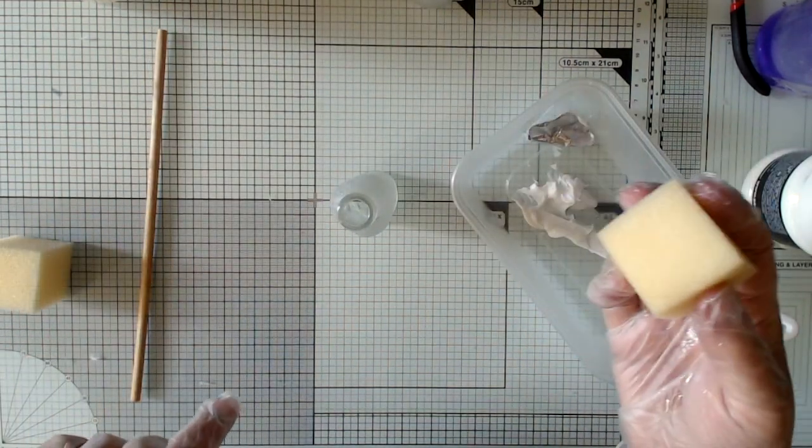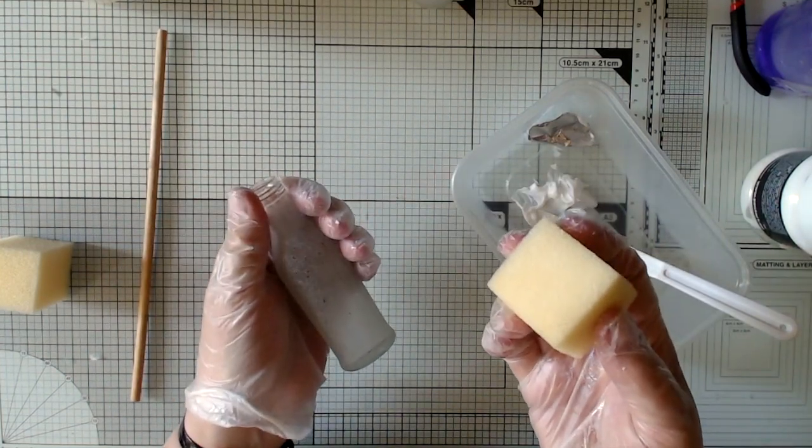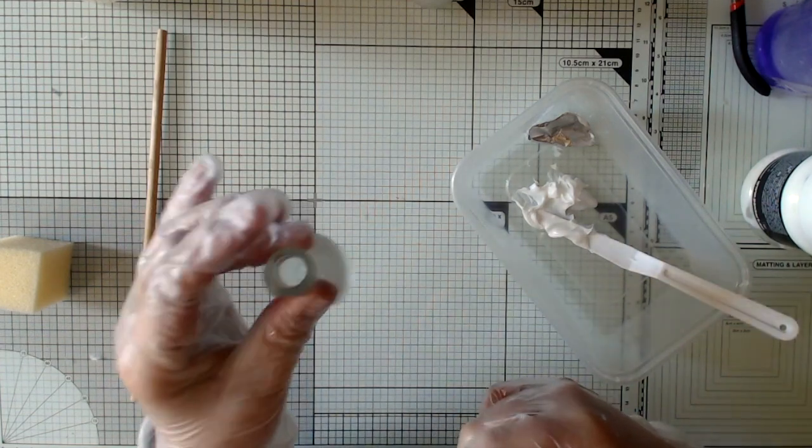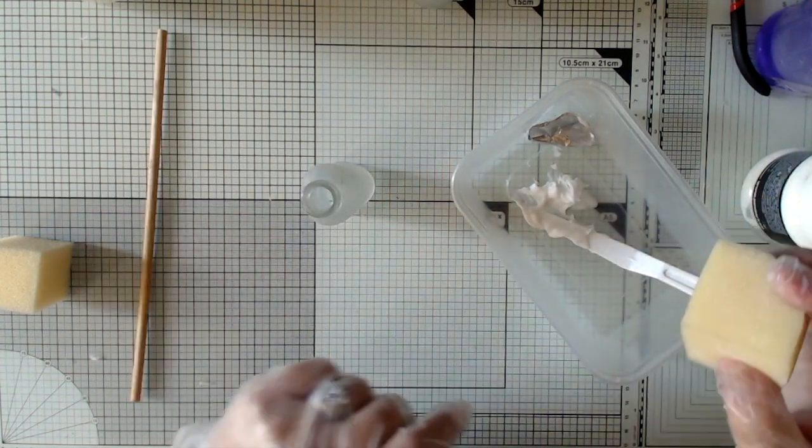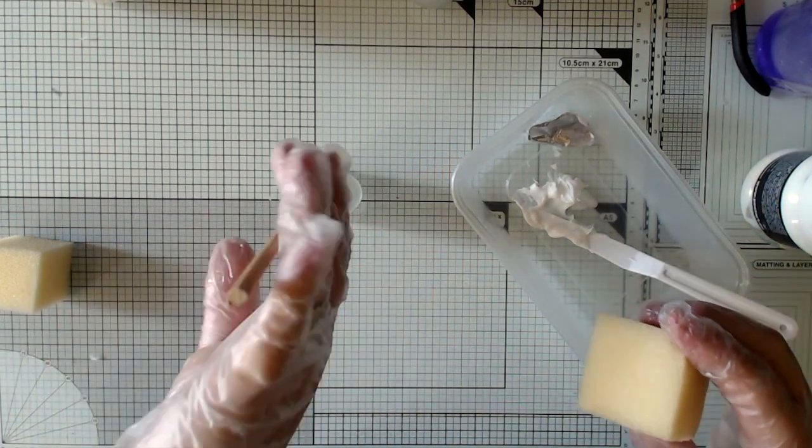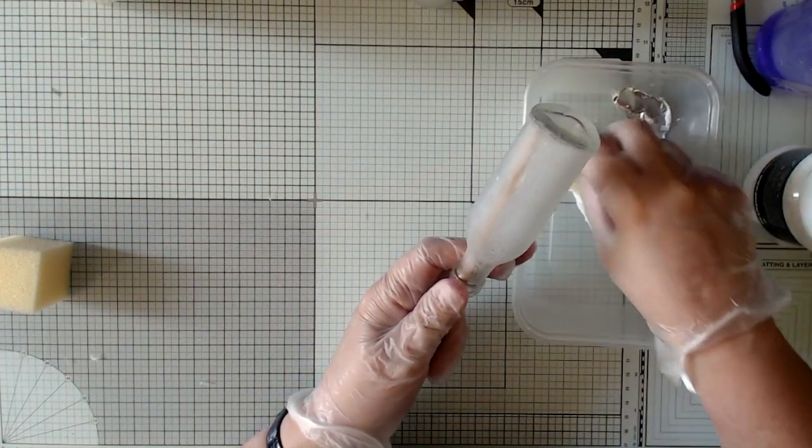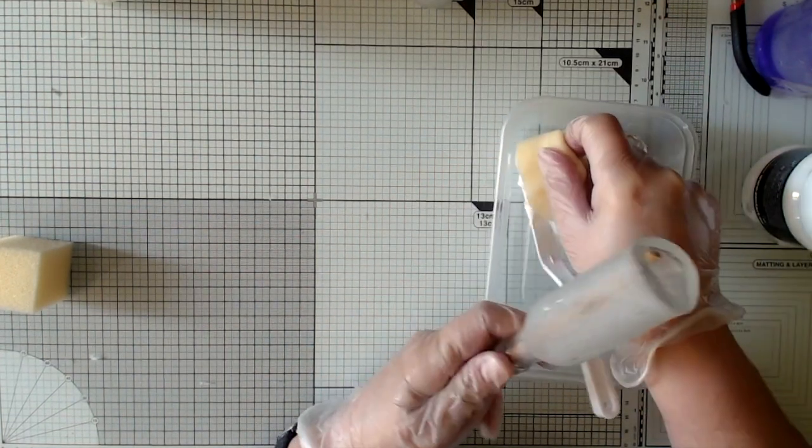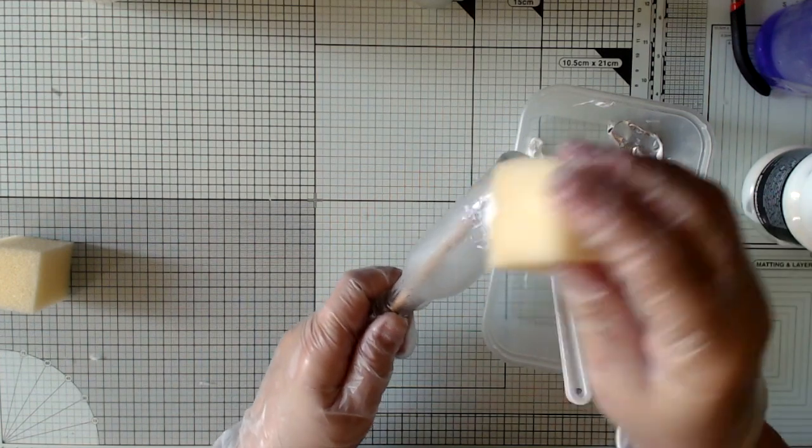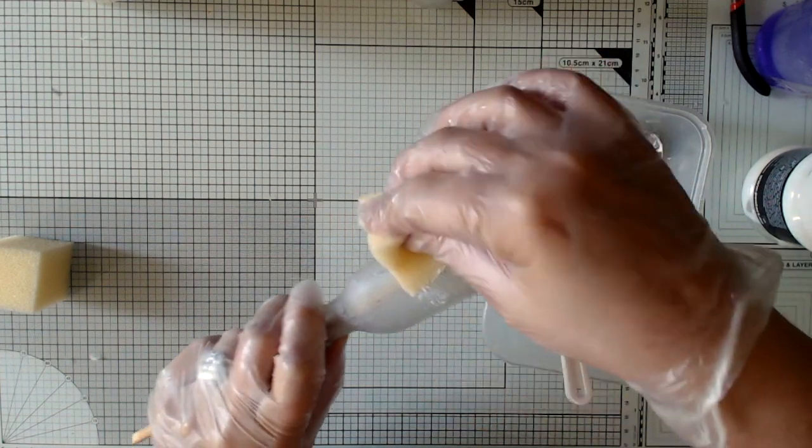Now I've got a sponge and I'm wearing gloves. The reason why I'm wearing gloves at this stage is because I've just gone ahead and cleaned the surface of the glass and I don't want to mess it up again with my mucky fingers. And I'm going to hold my glass on a stick and I'm just going to apply my gel.